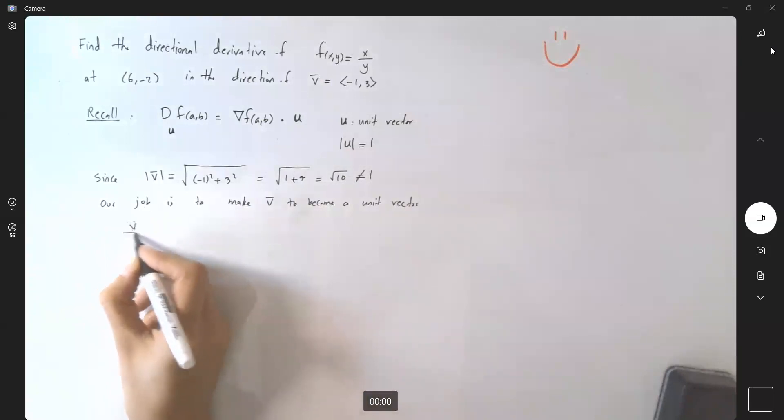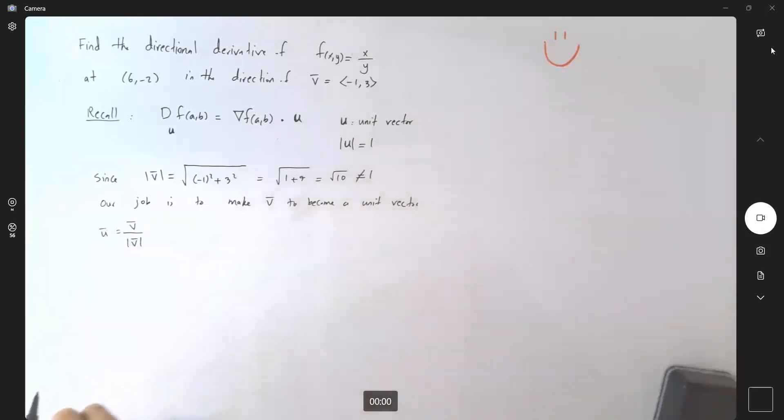Remember that if you take vector v and divide it by its magnitude, its norm, then you're building a unit vector. So this becomes the components (-1, 3) divided by square root of 10. So your unit vector is (-1/√10, 3/√10).